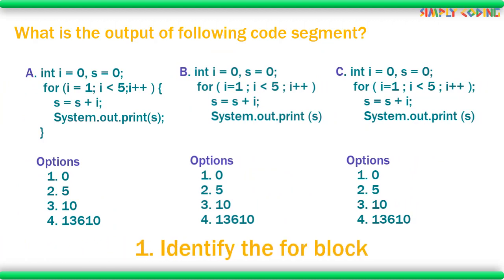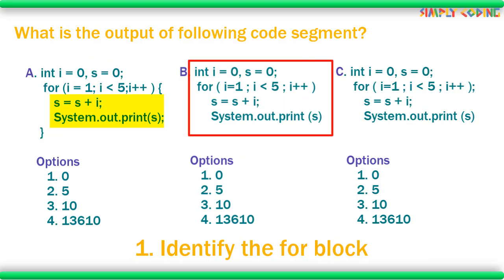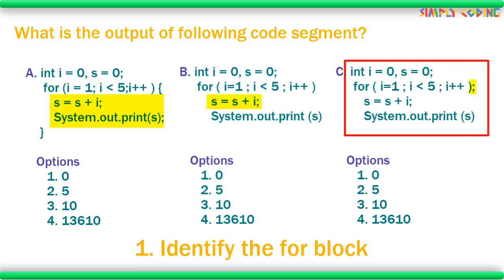The first step in the output kind of program is to correctly identify the for block itself. In the first question, brackets are given so it is easy to identify the body of the for loop. In the next one, when no brackets are given only the first statement until it reaches a semicolon is part of the body — not both indented statements. In the third for statement, there is a semicolon right after the for loop, so the loop ends there and has no body — none of the statements below are part of the for loop.